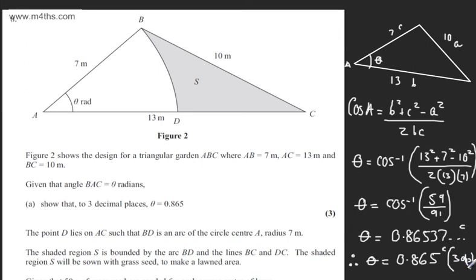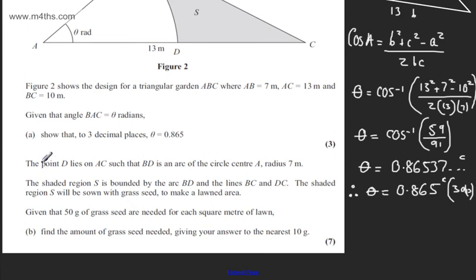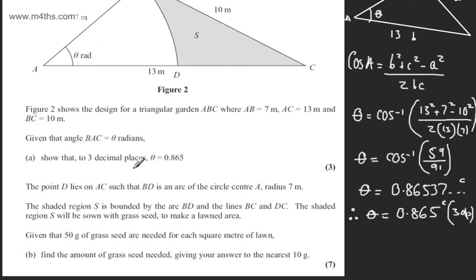So that's the first part — we simply used the cosine rule. We're now told that point D lies on AC such that BD is an arc of a circle centre A, radius 7 metres. The shaded region S is bounded by arc BD and lines BC and DC, and will be sown with grass seed. Given that 50 grams of seed are needed per square metre, in part B we find the amount needed to the nearest 10 grams. The question carries 7 marks.